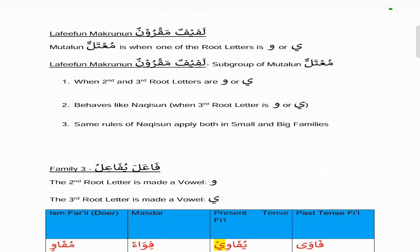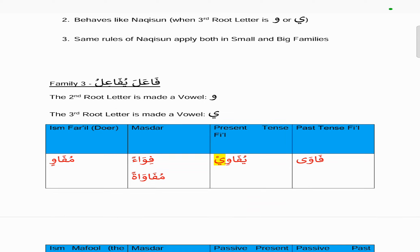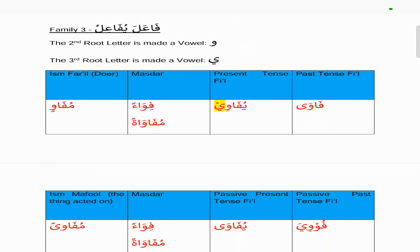Now we will look at Lafifun Makroonun. If you remember, Mu'tallun is when one of the root letters is waw or ya. Lafifun Makroonun is a subgroup of Mu'tallun where the second and third root letters are waw or ya. It behaves like Nakisun, where the third root letter is waw or ya, and the same rules of Nakisun apply both in small and big families.